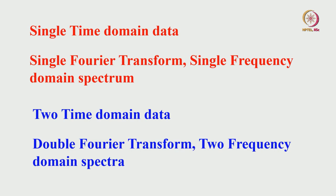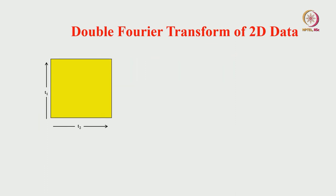Since we have two time domains, we do two Fourier transformations and get a two-frequency-domain spectrum. One time domain — one Fourier transformation — gives a one-dimensional spectrum. Two time domains — double Fourier transformation — gives a two-frequency-domain spectrum. T1 is also called F1, omega-1, or the indirect dimension; T2 is called F2, omega-2, or the direct dimension.